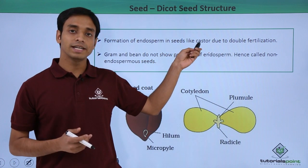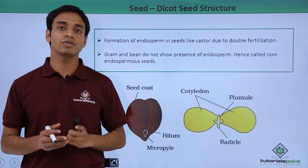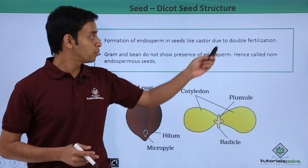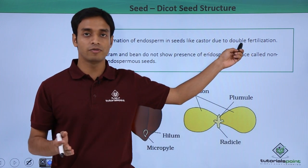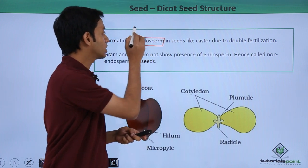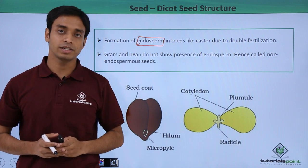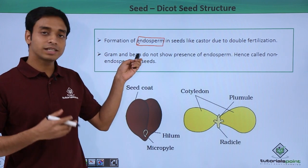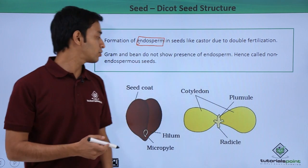There is a formation of endosperm in seeds — for example, in castor seeds — due to the process known as double fertilization, which we will discuss in later chapters. Because of double fertilization, a structure called endosperm is formed. Endosperm contains reserved food materials inside the seeds. Gram and bean are types of seeds that do not show the presence of endosperm, and hence these seeds are known as non-endospermic seeds.